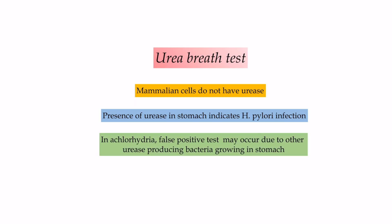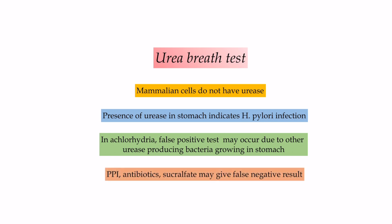In achlorhydria — meaning low acid production in the stomach — a false positive test may occur due to other urease-producing bacteria growing in the stomach. Proton pump inhibitors, antibiotics, and sucralfate may give a false negative result; these are stopped 1–2 weeks before the urea breath test.